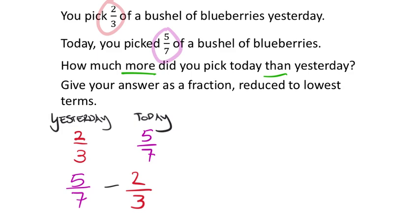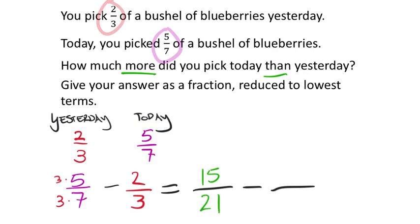We don't have common denominators, so we need to force them to match. Using the cross-multiplication method: multiply the denominator 3 into the numerator and denominator of the first fraction. Three times five is 15 in the numerator, and three times seven gives a common denominator of 21. Then multiply 7 into the second fraction: two times seven is 14.